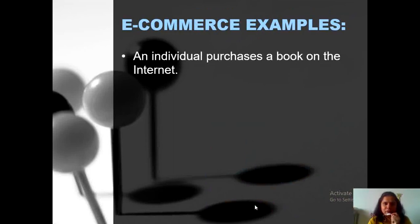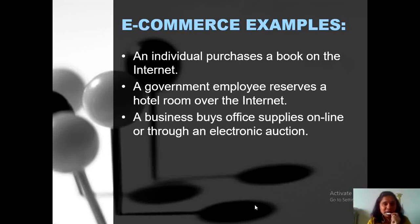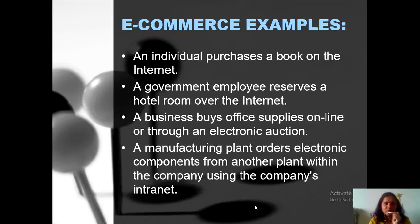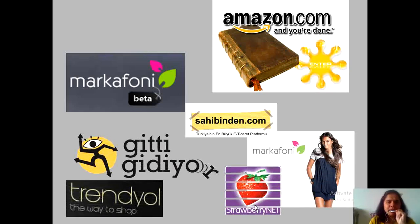Some examples: if you want to purchase a book, you can visit a particular website to buy it. A government employee can reserve a hotel room over the internet. A business can buy office supplies online or through an electronic auction. A manufacturing plant can order electronic components from another plant within the company using the company's intranet. Some well-known e-commerce websites include Amazon. Thank you for watching.